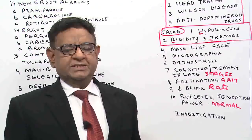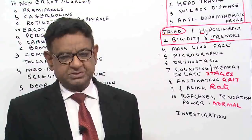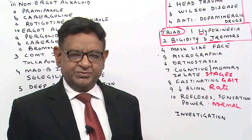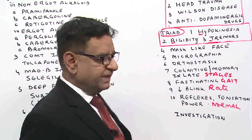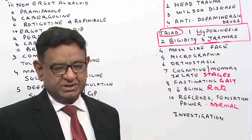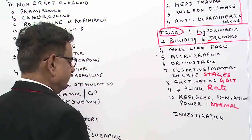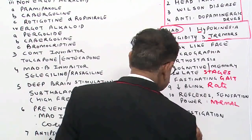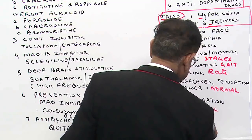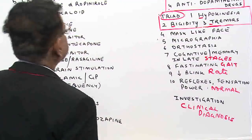How to investigate: if a patient comes to us, it is usually a clinical diagnosis. By and large, CT and MRI are normal, but we do get them done to rule out other possible diseases. So diagnosis is mainly a clinical diagnosis.